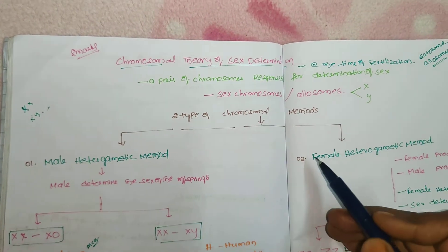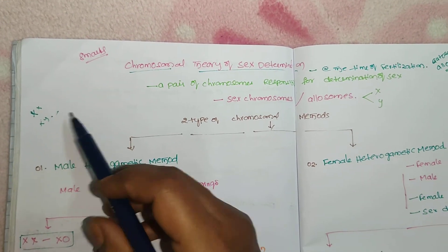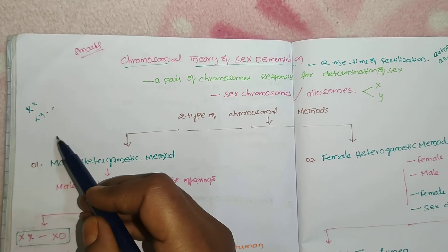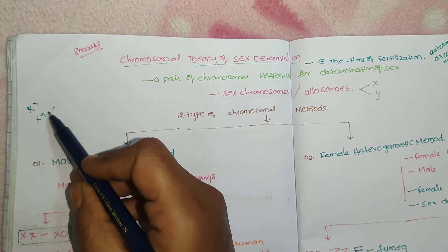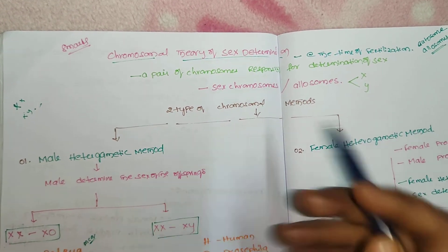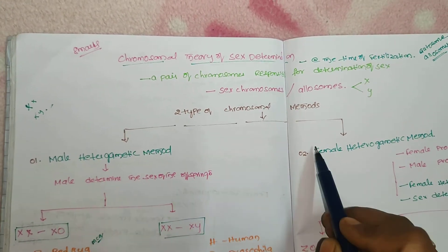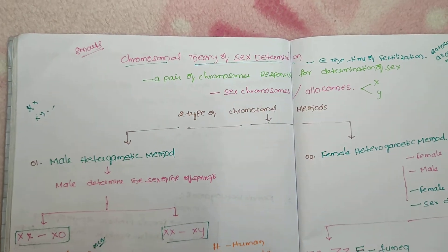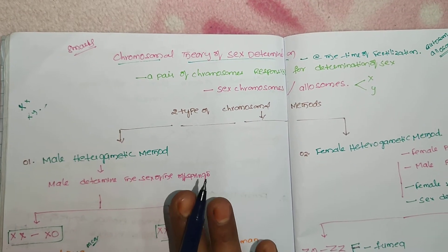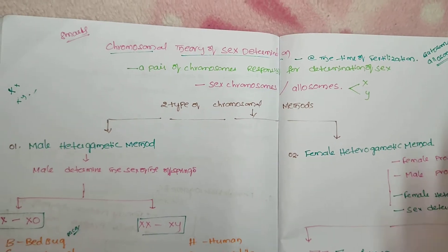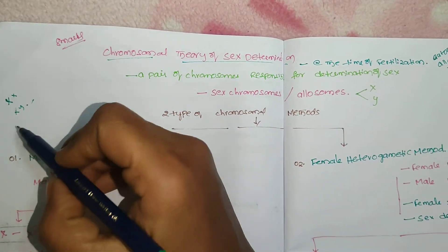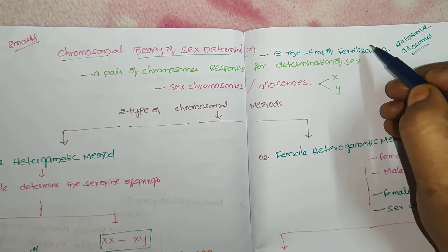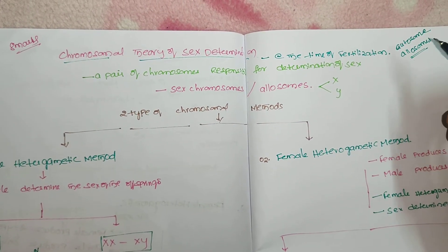Whether it is male or female, the heterogametic condition will decide the sex of the offspring. If the male has heterogametic condition, the male decides the sex. If the female has dissimilar gametes, then the female decides the sex. So male or female itself is not the parameter — the heterogametic condition is the parameter. At the time of fertilization, the sex of the offspring is decided.